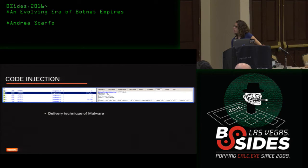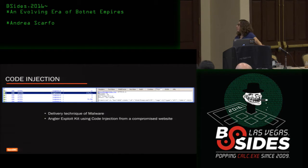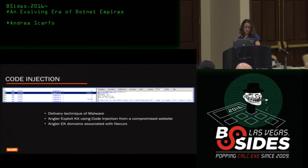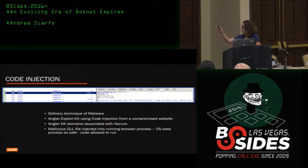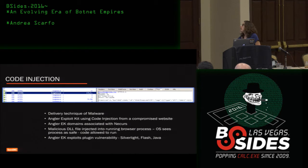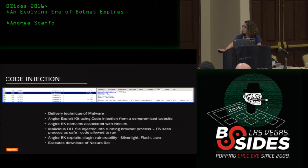One technique malware uses once on a system is code injection. This screen capture shows the Angler exploit kit using code injection on a compromised website. We've seen the Angler exploit kit as part of the Necurs botnet. Here, a DLL file gets injected into the browser process, and the OS sees it as a safe process and allows it to run. At that point the exploit kit can take advantage of plugin exploits through Silverlight, Flash, or Java. Once it executes that code, it downloads the Necurs bot on the machine, and it is enlisted into the botnet.